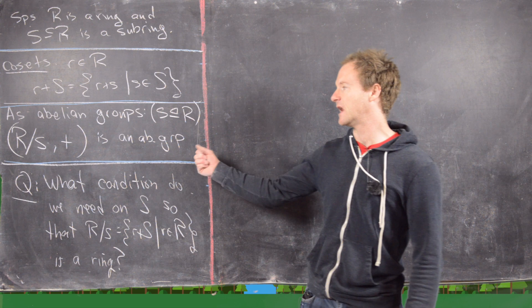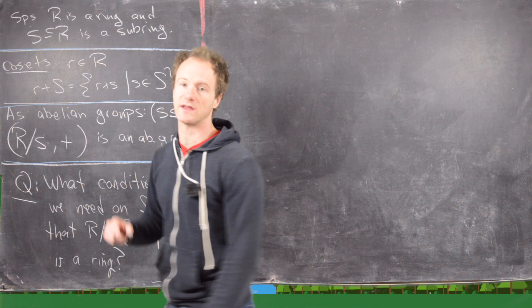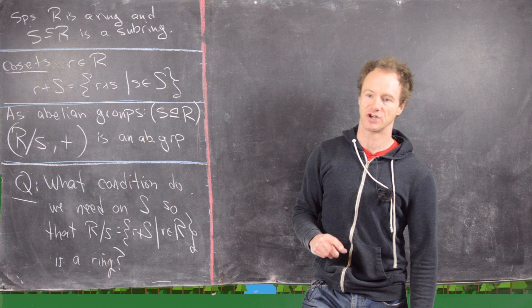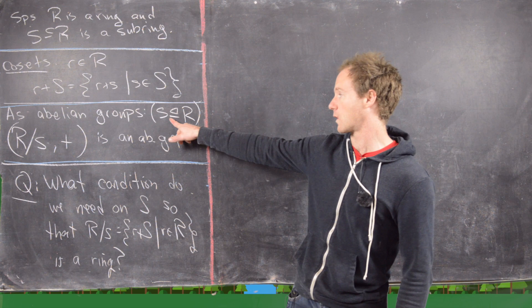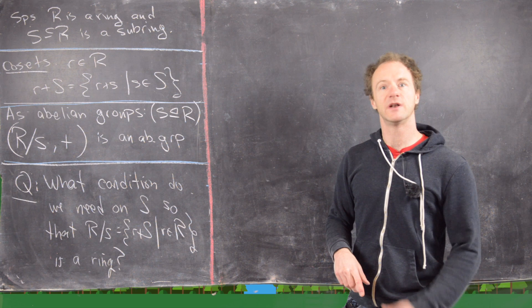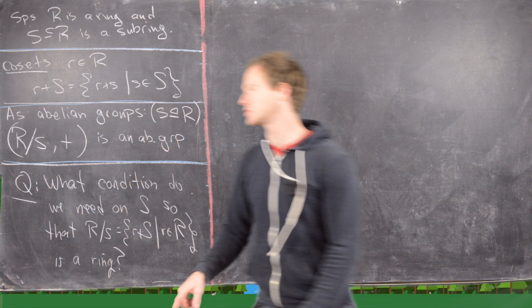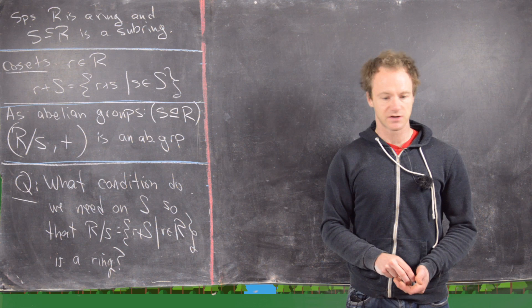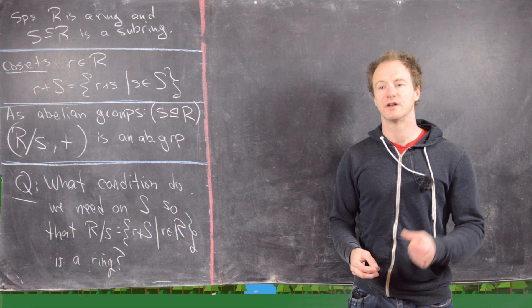A lot of stuff we get for free: R is an abelian group under addition, which means S is an abelian subgroup under addition. Subgroups of abelian groups are always normal, so as abelian groups S is a normal subgroup of R. If you have a normal subgroup of R you can immediately form the quotient group, so this quotient group R mod S is going to be an abelian group with respect to addition. A lot of stuff is free given the fact that a ring has this abelian group built into it.